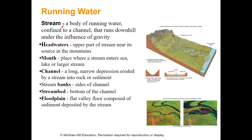A stream and a river are the same thing - a body of running water confined to a channel that runs downhill under the influence of gravity. There are different parts: the headwaters at the very top/back end; the mouth where it ends at a sea or lake; the channel, which is the narrow region it flows in; the banks, which are the sides; and the stream bed, which is the bottom - where all the sediment is. The floodplain is the area outside the channel that floods when a stream overflows its banks.